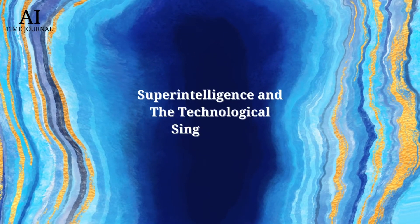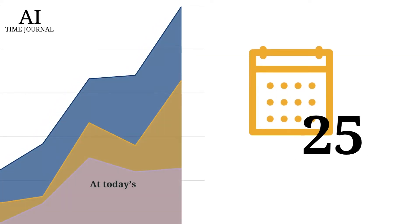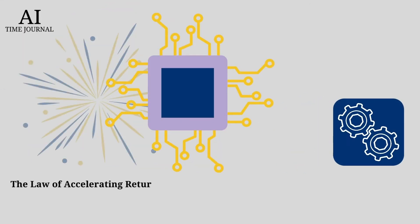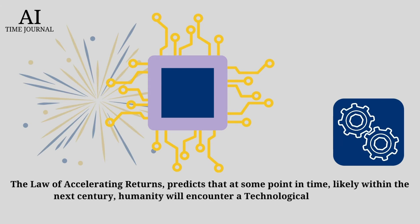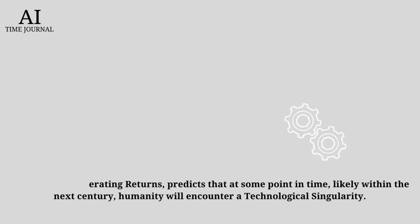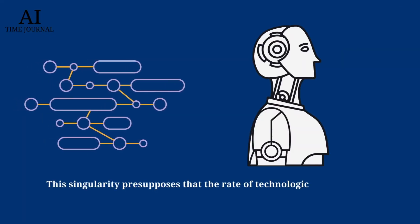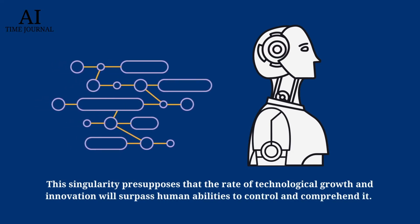Superintelligence and the Technological Singularity. At today's rate of innovation, we can expect to see a century's worth of progress in approximately 25 years. The Law of Accelerating Returns predicts that at some point in time, likely within the next century, humanity will encounter a technological singularity — a point where the rate of technological growth and innovation will surpass human abilities to control it and comprehend it.